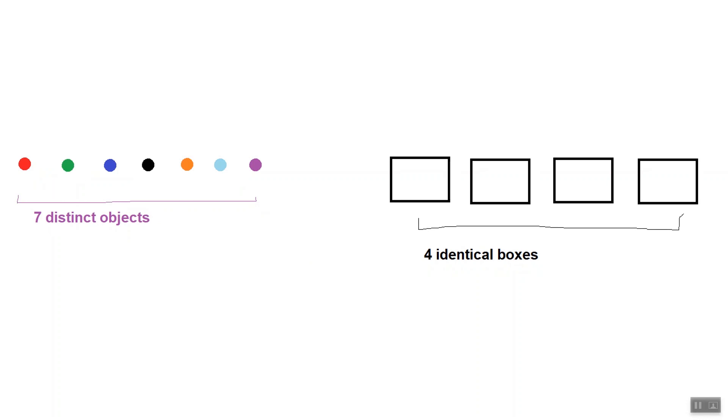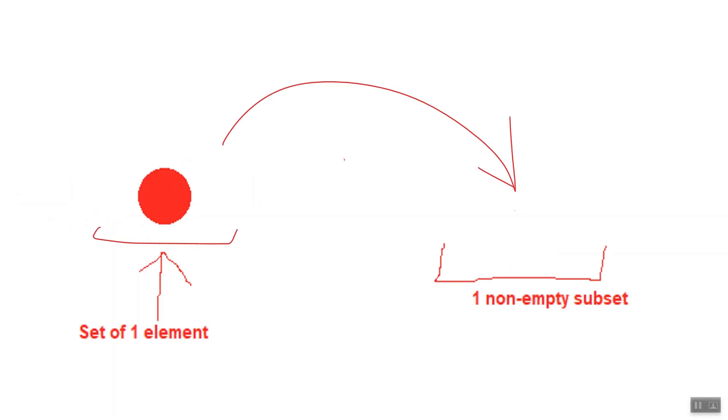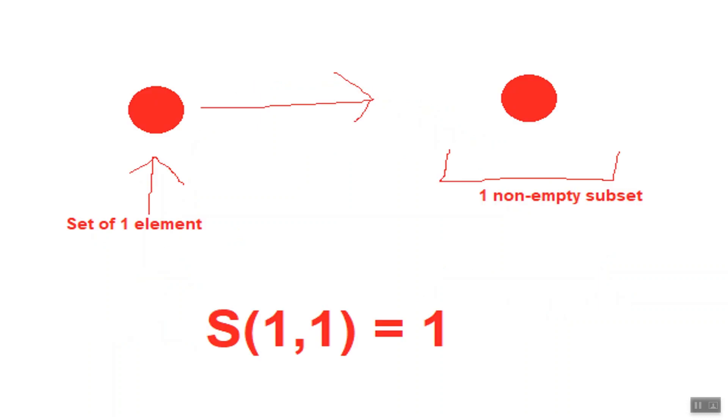Let's think about how this works with some small sets. Imagine we have a set of one element. How many ways can we distribute this element into one non-empty subset? Well, there's only one way to do it, which is to place our only element into that subset. This means that S(1,1) equals 1.